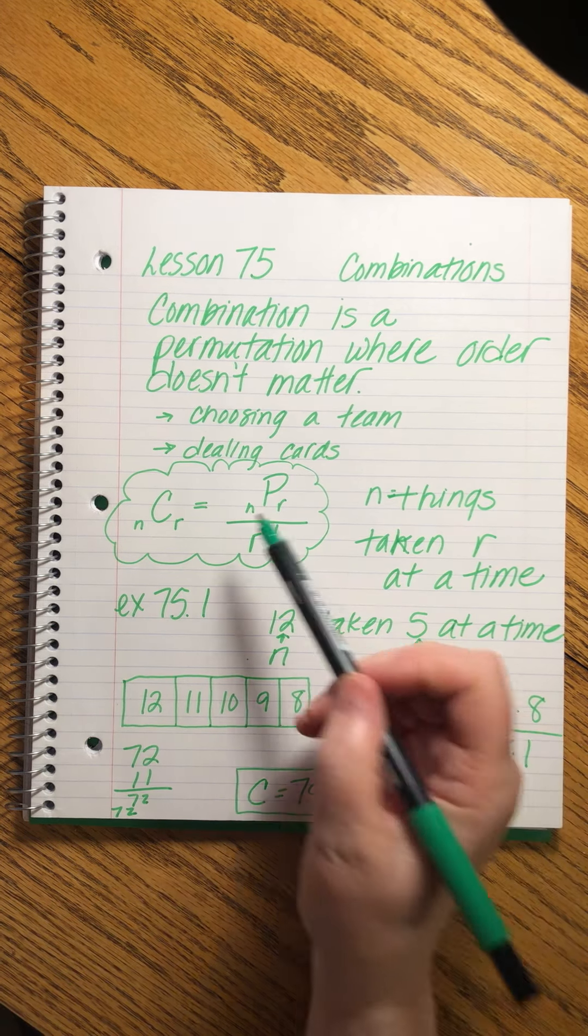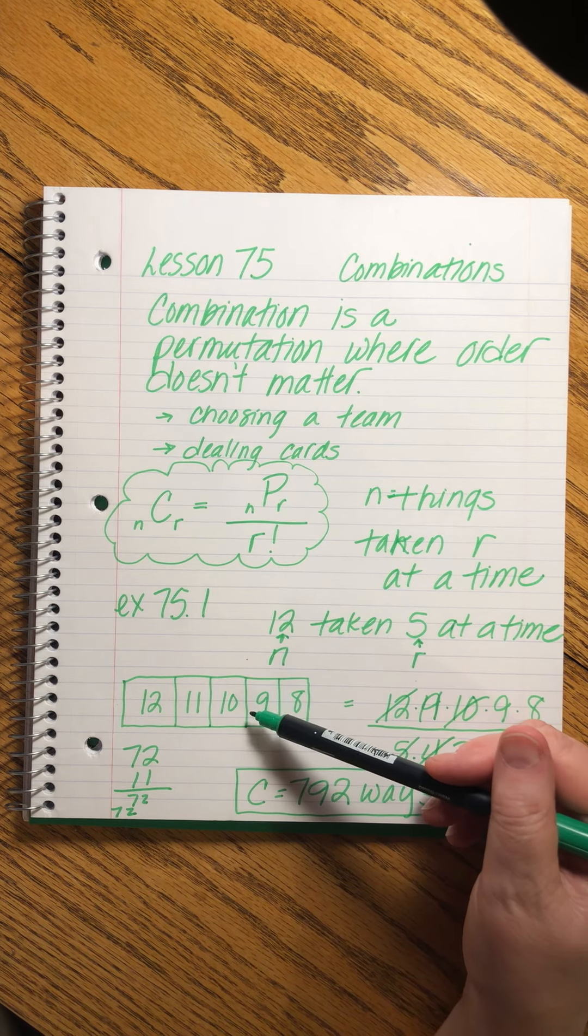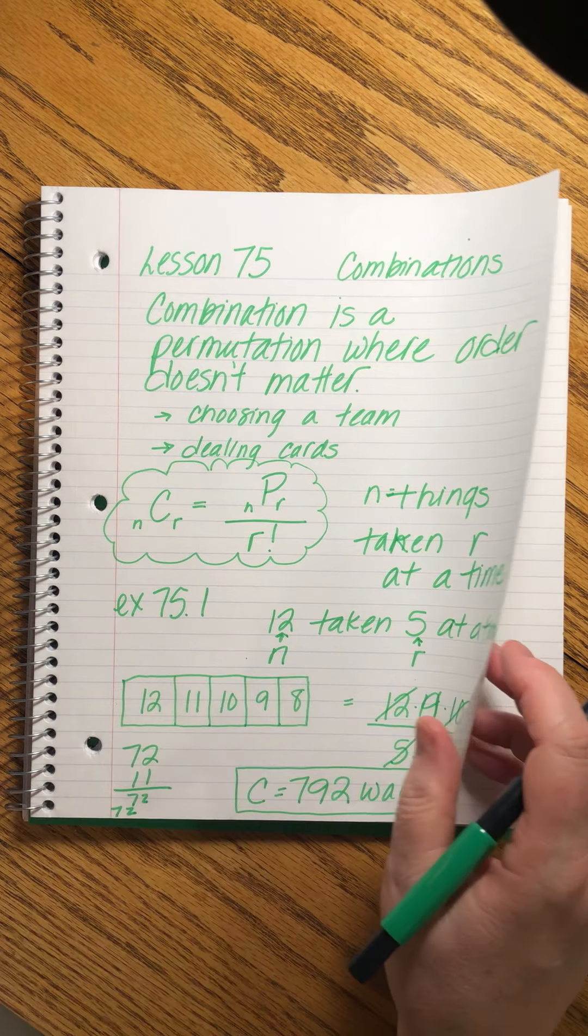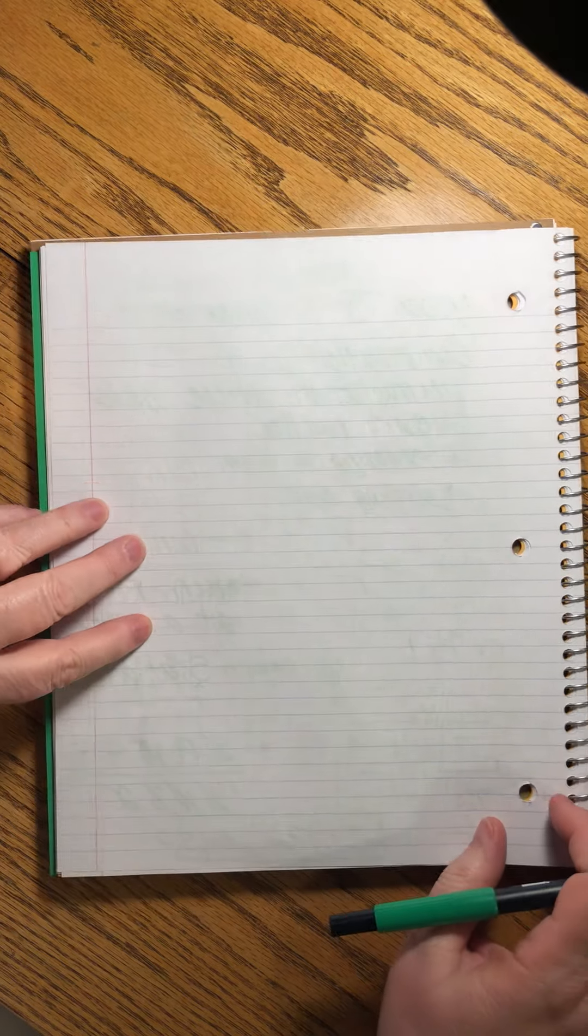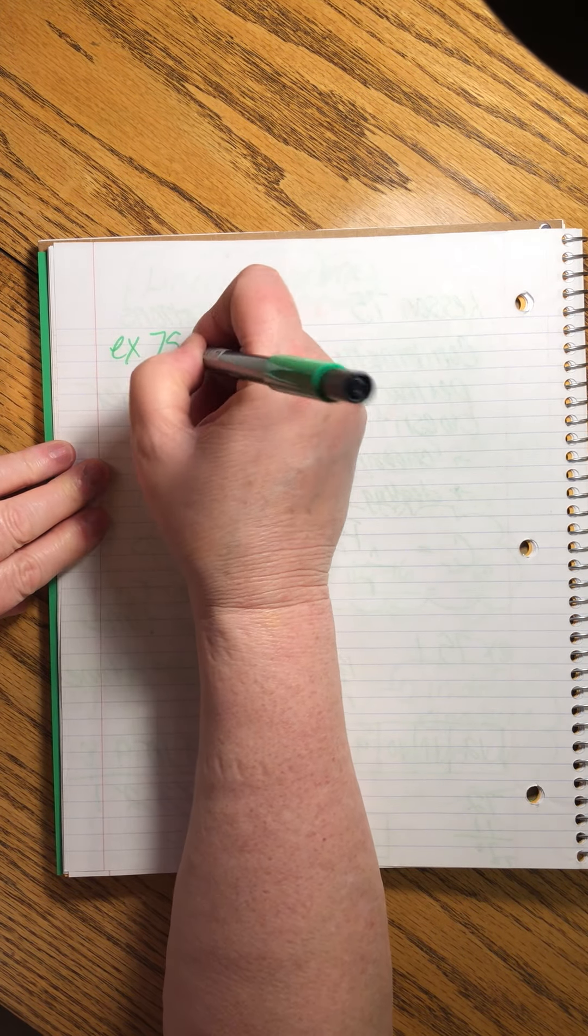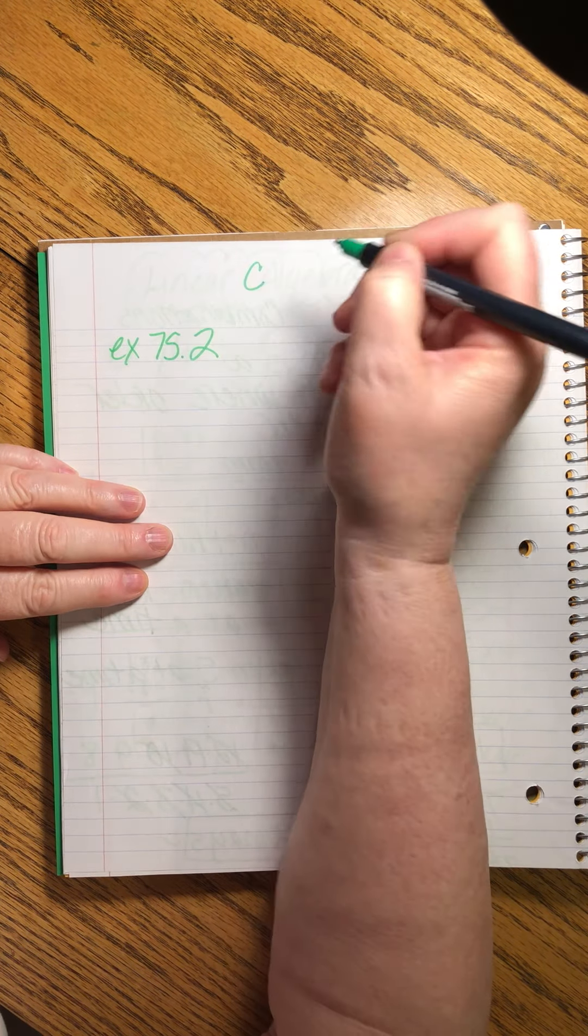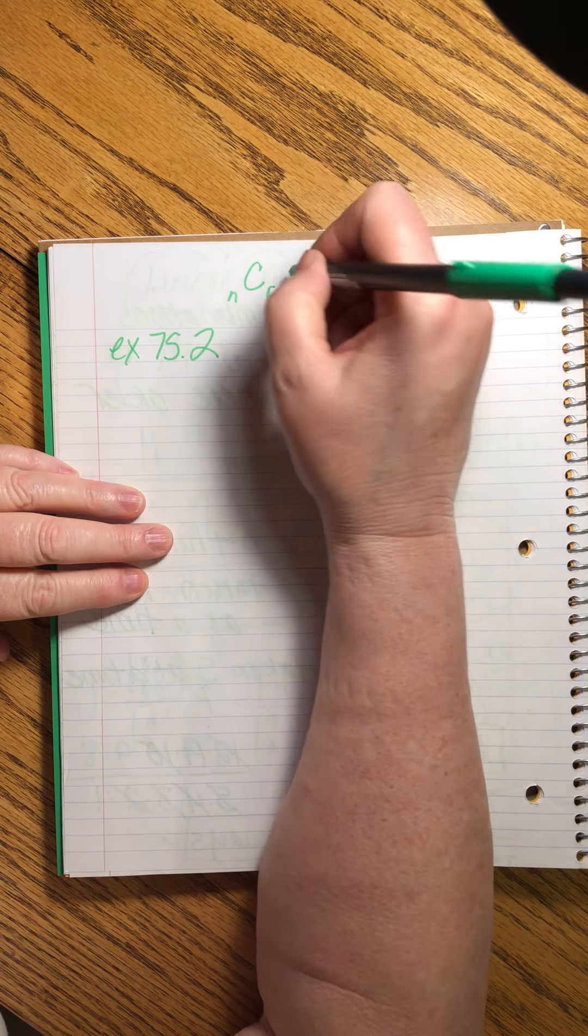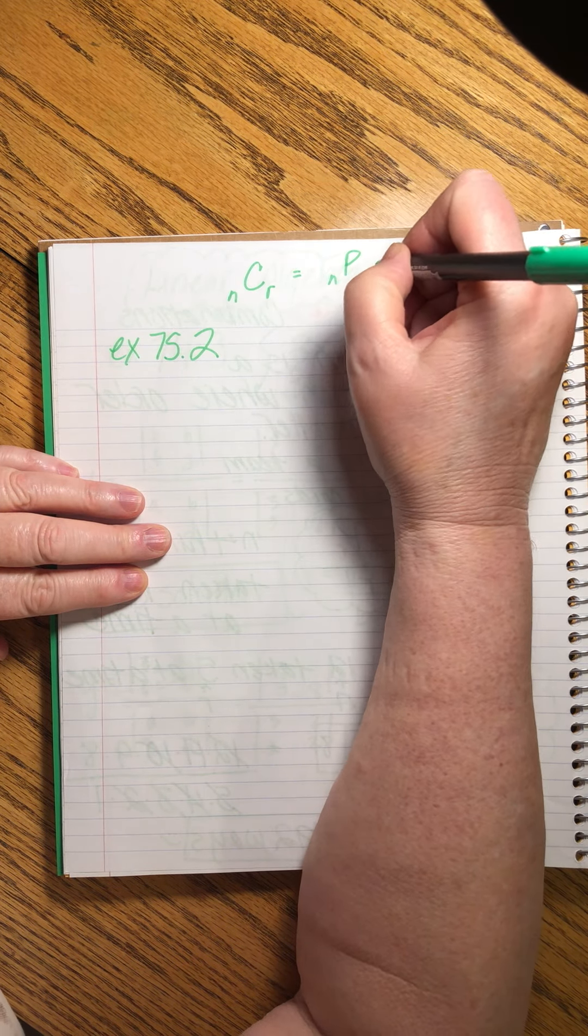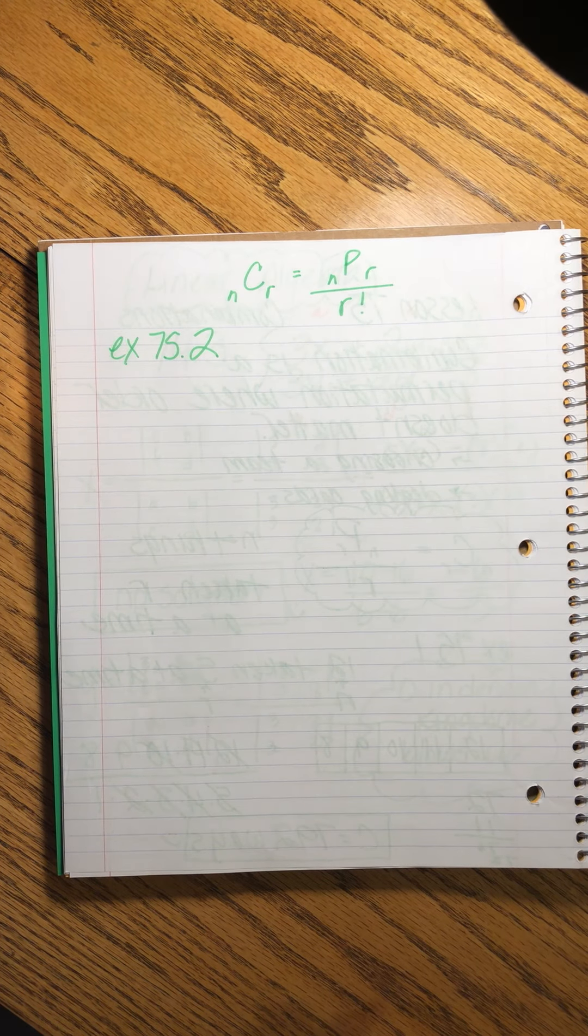So this calculation is pretty straightforward, right? We just find the permutation, which we've been doing for a good long time, and divide it by that number. We just have to carefully identify our n and our r. Let's do another one, 75.2. Let me write it again. The combination of n things taken r at a time is equal to the permutation of n things taken r at a time divided by r factorial.